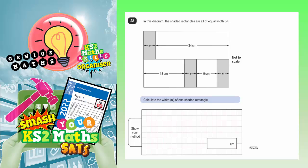Question 22. In this diagram, the shaded rectangles are all of equal width, W. Calculate the width of one shaded rectangle.